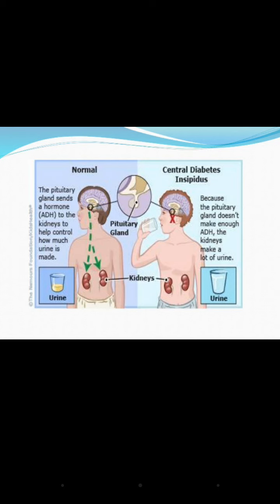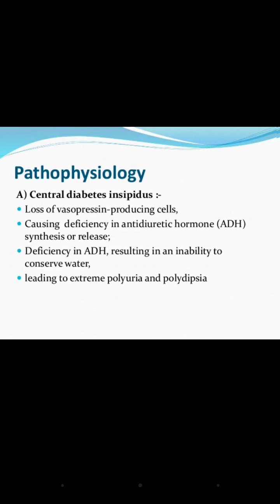In central diabetes insipidus, the pituitary gland does not make enough ADH. The kidneys are normal, but the posterior pituitary is affected. There is a defect in the pituitary gland — it is unable to make antidiuretic hormone, either producing less than normal or a complete deficiency. There is loss of vasopressin-producing cells in the posterior pituitary.